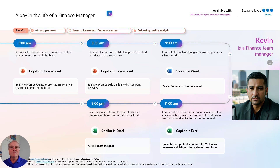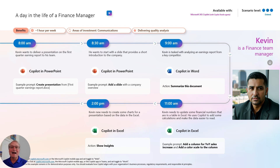We looked at how Copilot can be used in PowerPoint to get a really good start on a new slide deck. We looked at Copilot in Word and how it can be used to summarize a lot of data. We also looked at Excel — how Copilot can create new columns and provide analysis. This is a nice tool. A finance manager could easily use Copilot to shorten his workday and give him more time to do further analysis on his business and work with customers, vendors, and other people in his organization.